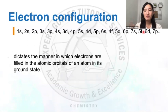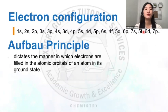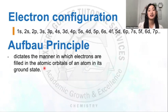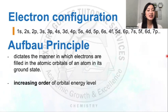It's very hard to memorize this very long order of numbers and letters. That is why, following the Aufbau principle, we need to follow this rule: the Aufbau principle dictates the manner in which electrons are filled in the atomic orbitals of an atom in its ground state, meaning electrons are filled in increasing order of orbital energy level.